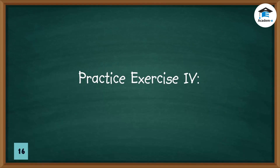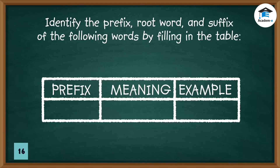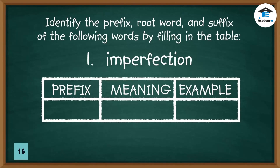Practice exercise four. Identify the prefix, root word, and suffix of the following words by filling in the table. Words: unhappiness, imperfection.